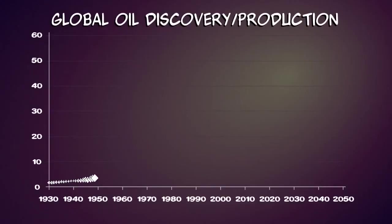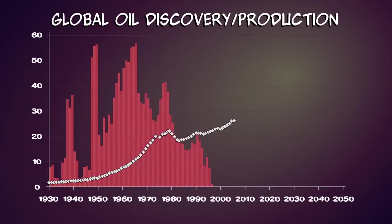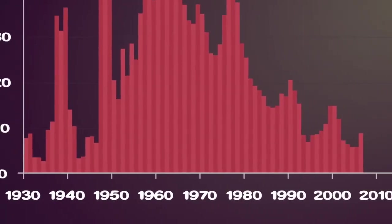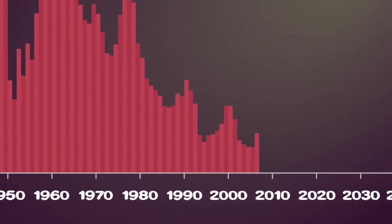Evidence is now mounting that world oil production is peaking, or is close to it. Globally, the rate of discovery of new oil fields peaked in the 1960s. Over 40 years later, the decline in discovery of new fields seems unstoppable.